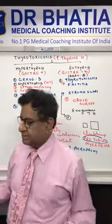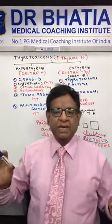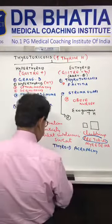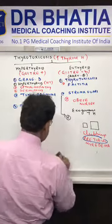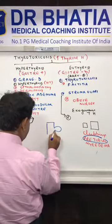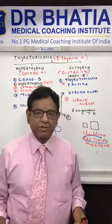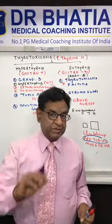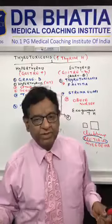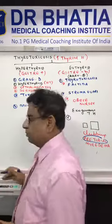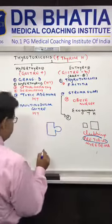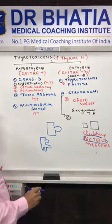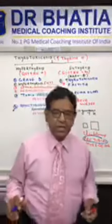So diffuse enlargement of the gland with eye signs like proptosis, clubbing, and pre-tibial myxedema simply confirms Graves' disease. I would go for thyroid function tests. Suppose there are no eye signs, no clubbing, and on examining the neck I find only a single nodule - that confirms toxic adenoma. In toxic adenoma, no eye signs, no skin signs, but all the features of thyrotoxicosis are present. In another patient with multiple nodules, it is a case of multinodular goiter.